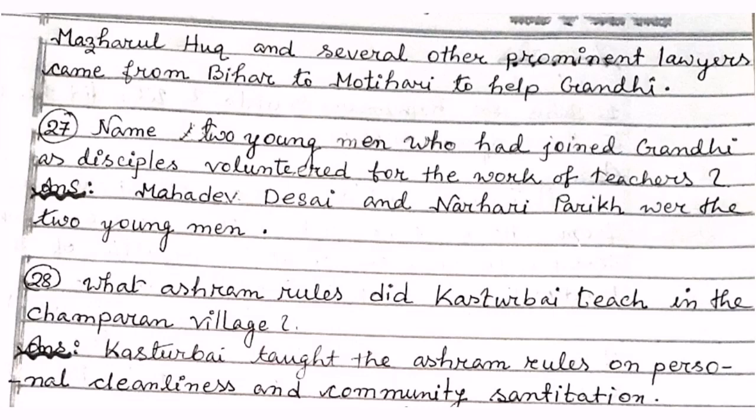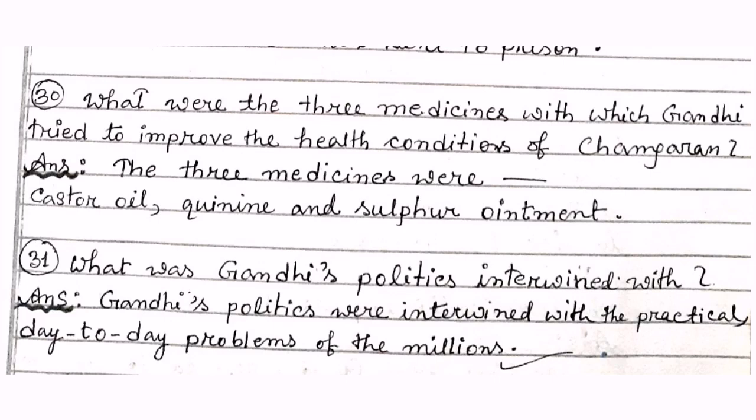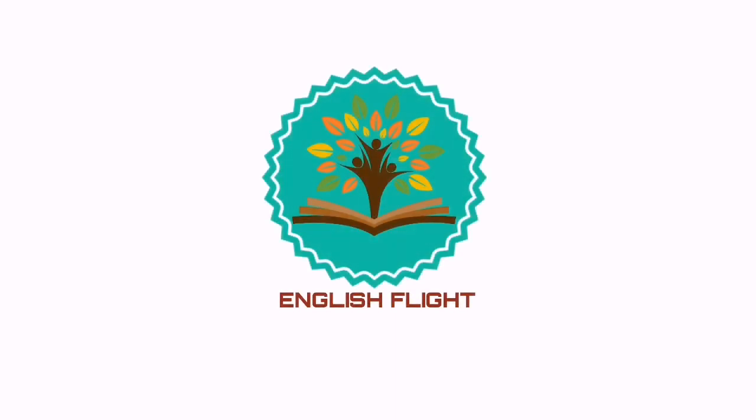What ashram rules did Kasturba Gandhi teach in the Champaran villages? Kasturba taught the ashram rules on personal cleanliness and community sanitation. Number twenty-nine: what was the gist of the conversation between Gandhi and the lawyers who wished to return home at the event of Gandhi's imprisonment? The gist was about what the lawyers would do if Gandhi was sent to prison. What were the three medicines with which Gandhi tried to improve the health conditions of Champaran? The three medicines were castor oil, quinine, and sulphur ointment. Gandhi's politics were intertwined with the practical day-to-day problems of the millions.